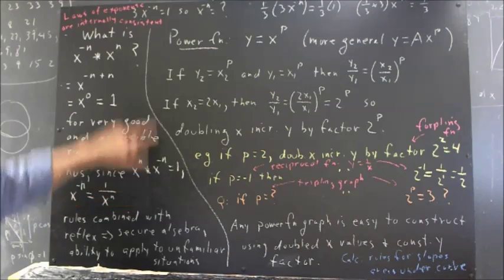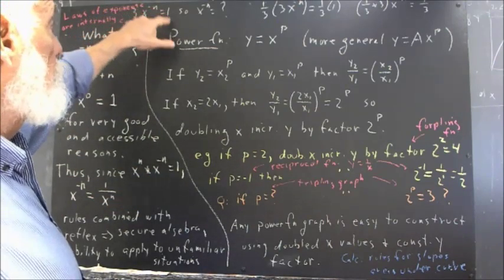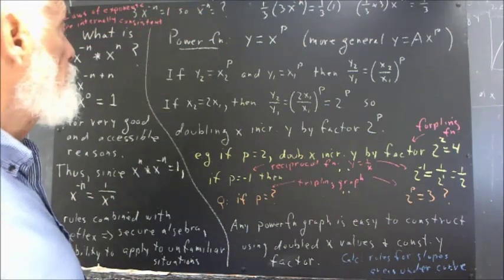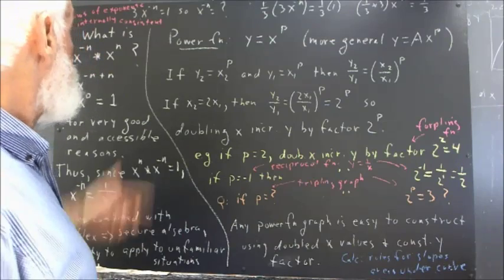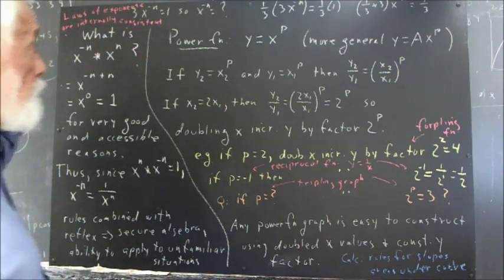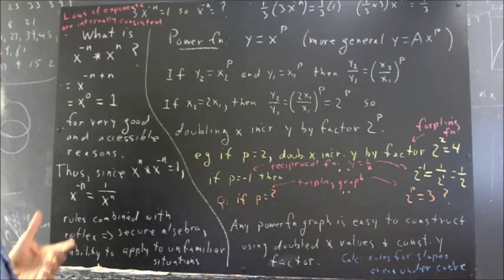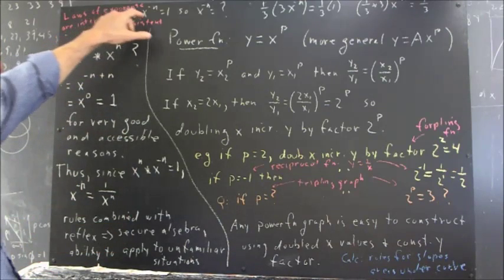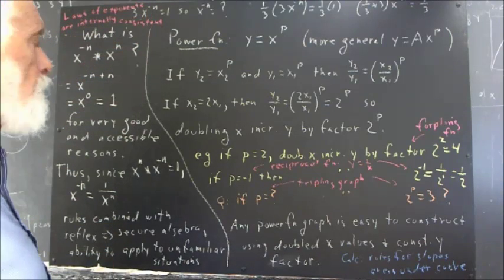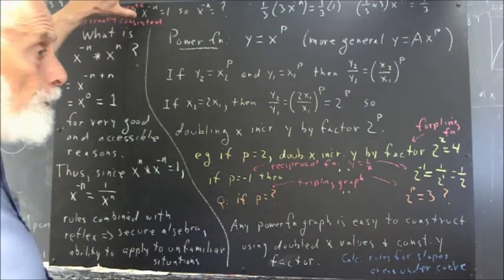We had to go up here and say, well, if 3x to the negative n equals one, what does x to the negative n equal? And people still had trouble because your reflexes don't kick in when you see that x. As soon as I see that x to the negative n there, your reflexes are gone.